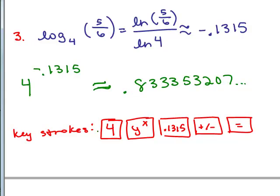These are the keystrokes I used. I put in the 4, that's the base, then the y to the x to show you're going to put the exponent as. Now, you want negative 0.1315, so I first have to put 0.1315, and then that little plus minus key, and then I press equals, and that's how I came up with the answer. All right, so just make sure you practice using your calculator and that you know how to check your answers.